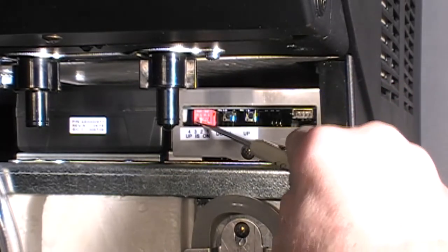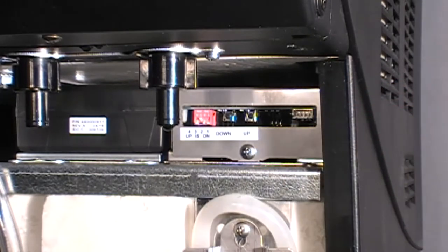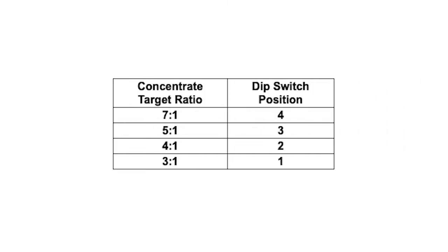The dip switches have been pre-configured for ratios of 7 to 1, 5 to 1, 4 to 1, and 3 to 1 ratios going left to right. To set the dip switch position, use a small flat head screwdriver to set the desired switch to the up position with all other switches down. Only one single dip switch can be selected. If multiple dip switches are selected, control will default to factory setting of 5 to 1.